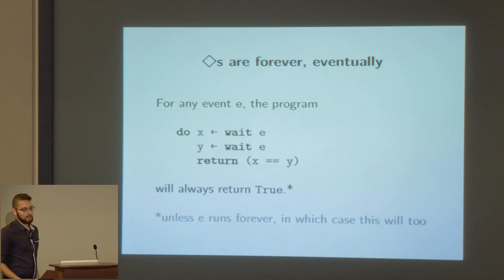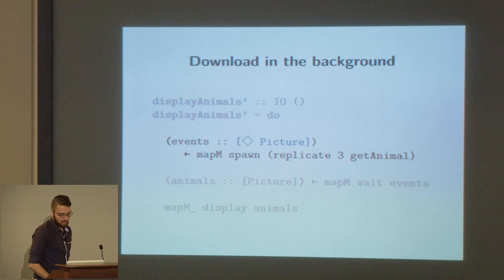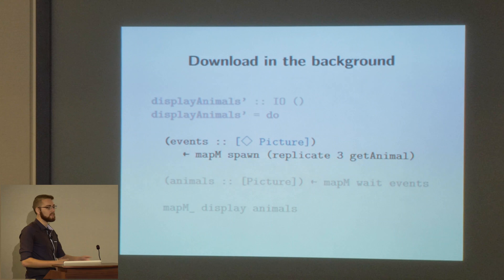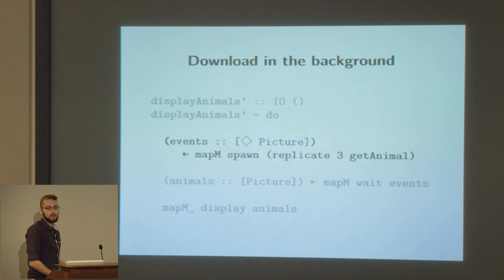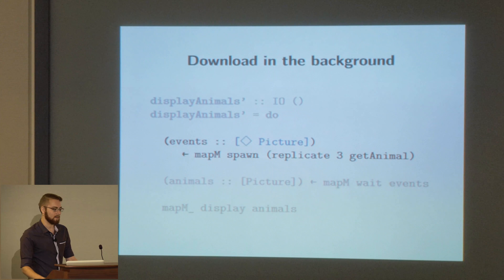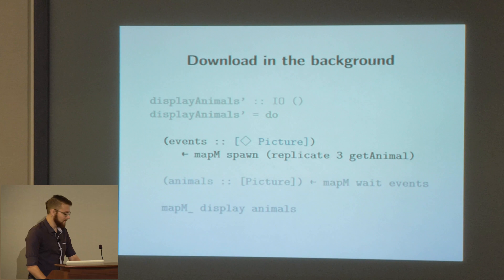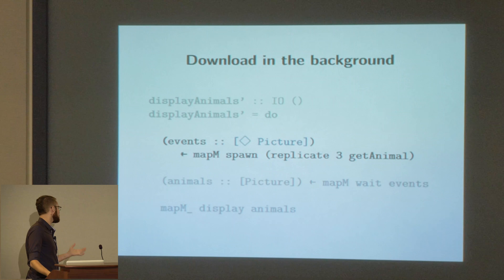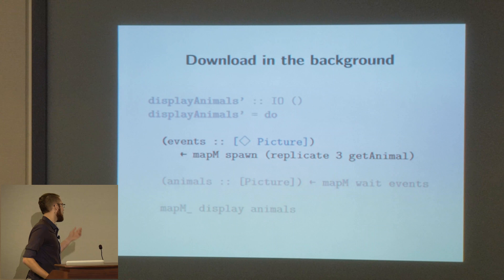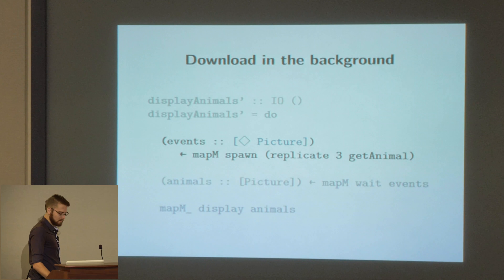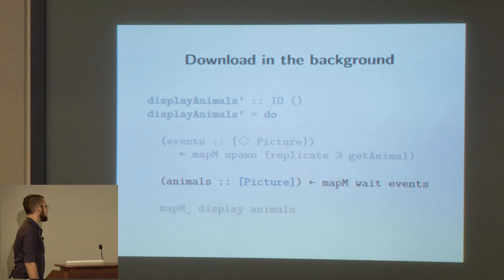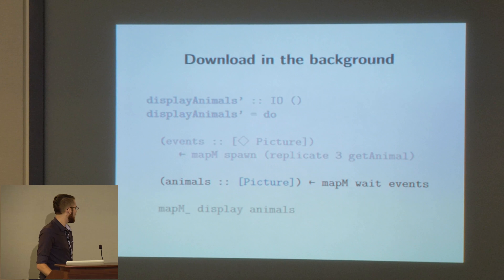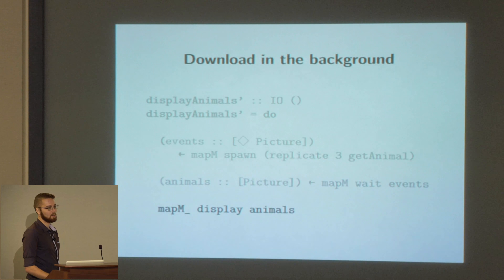We can use this event-based framework to download a bunch of pictures of animals in the background and then display them all at once. We spawn off three different events that correspond to getting animals and store them in a list of events. Then we map the wait function across all of the events to get a list of pictures, and display all of the animals. It's better — now we start all of the events at the same time and it's much faster.